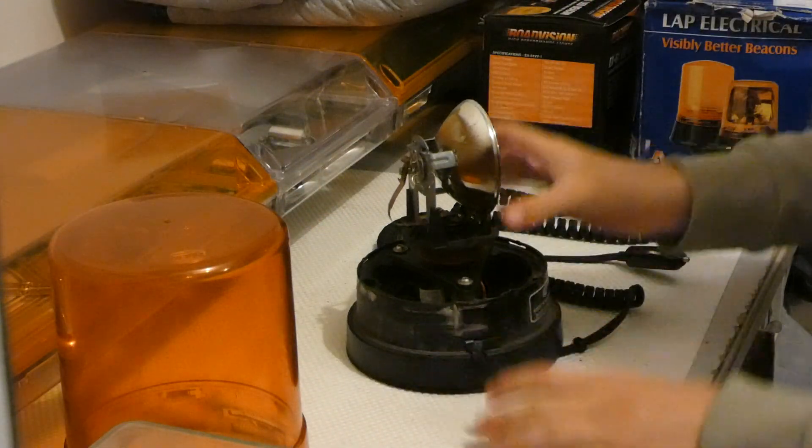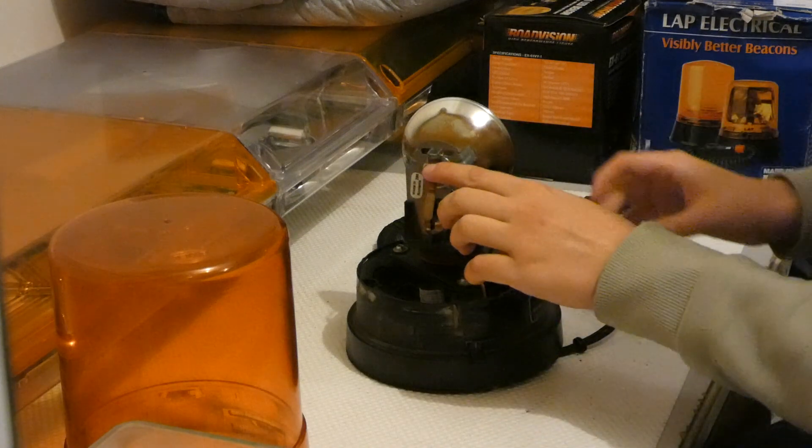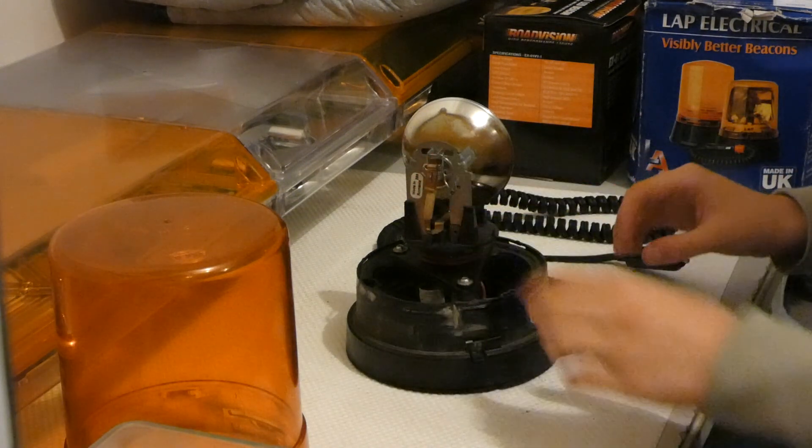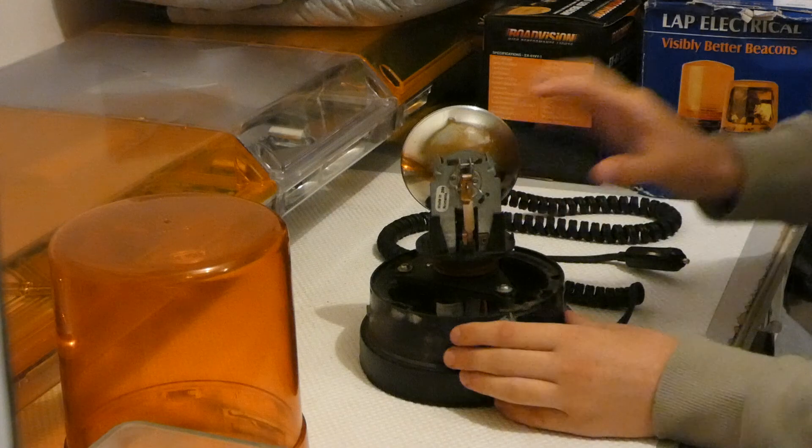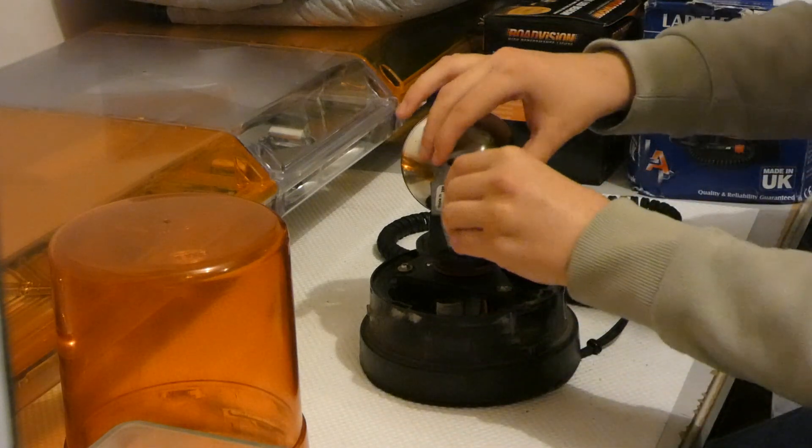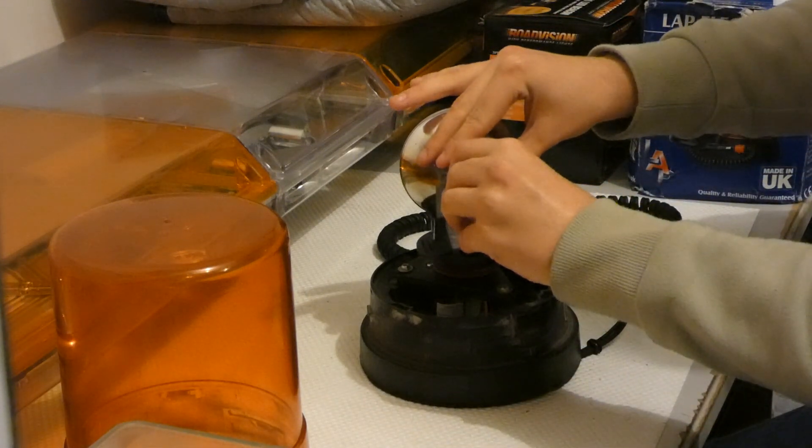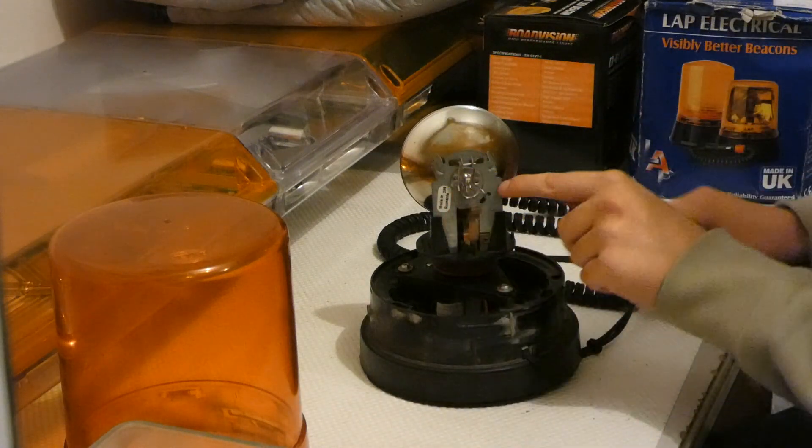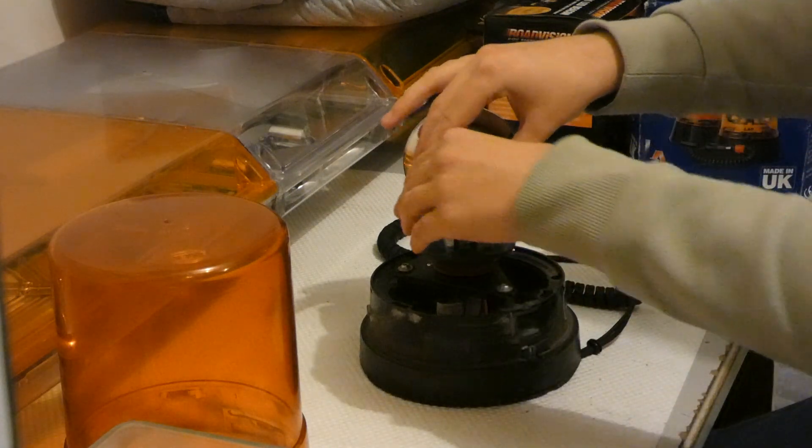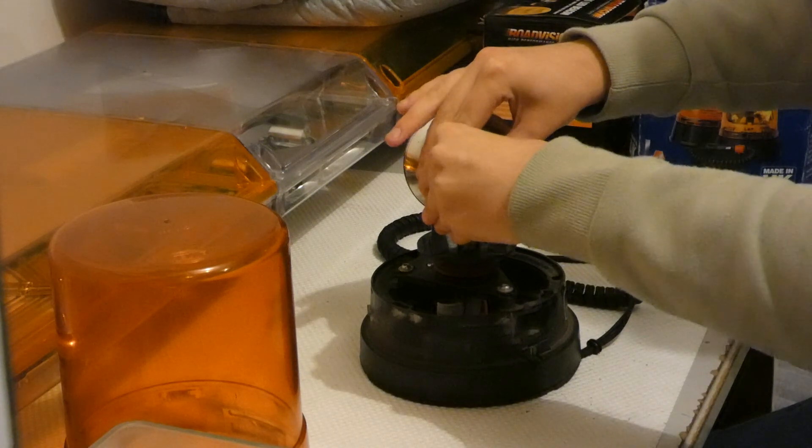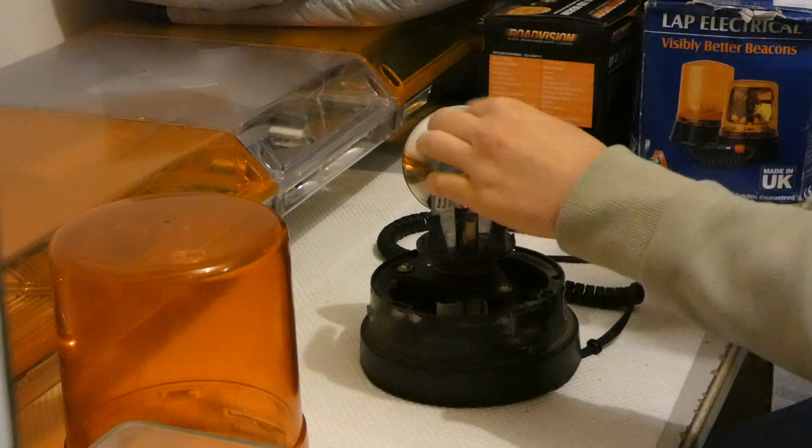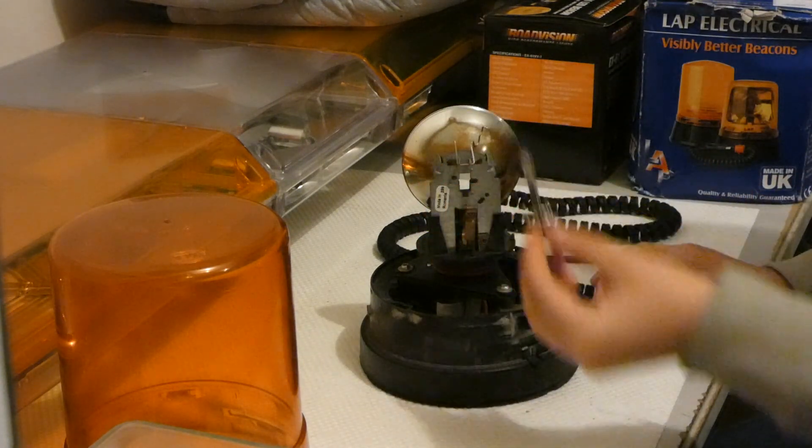Here you will see the reflector assembly with the halogen bulb inserted in the rear of the reflector. In order to replace the halogen bulb, simply remove this metal tab like so and slide down on this metal arm here. There we go. That frees the halogen bulb like so.